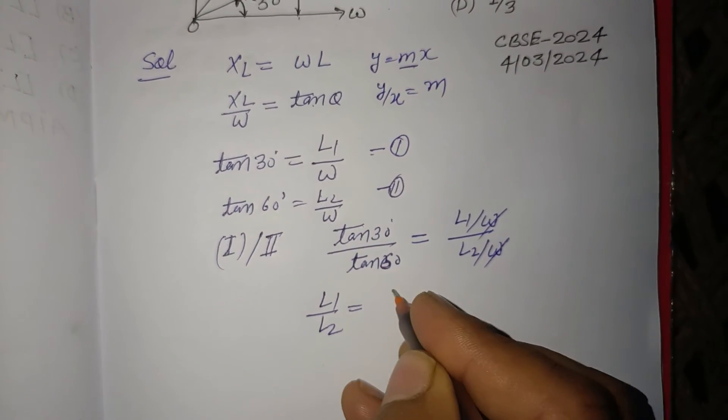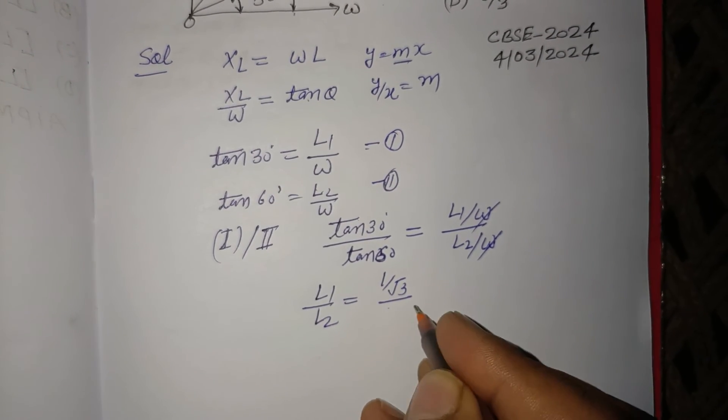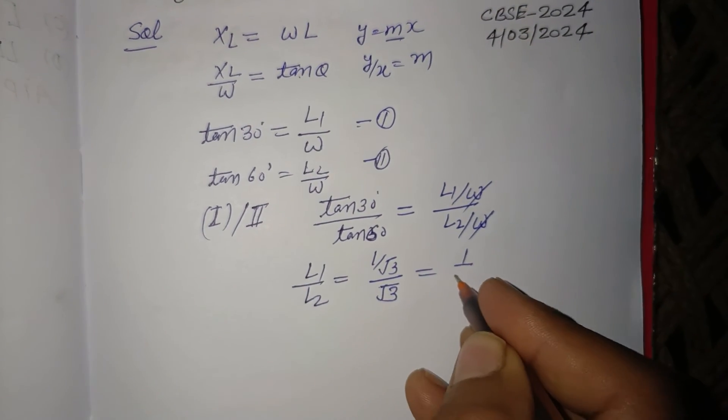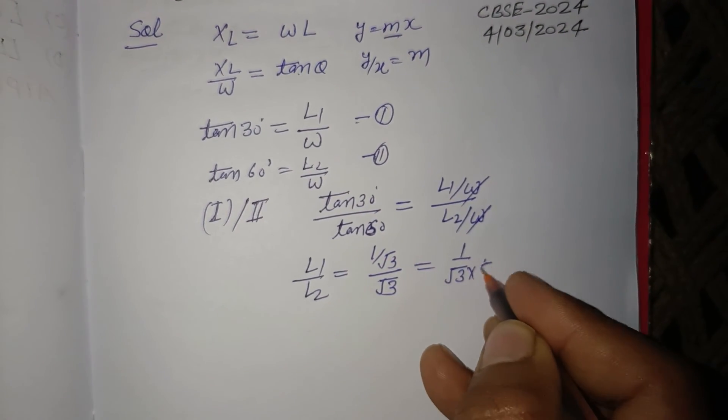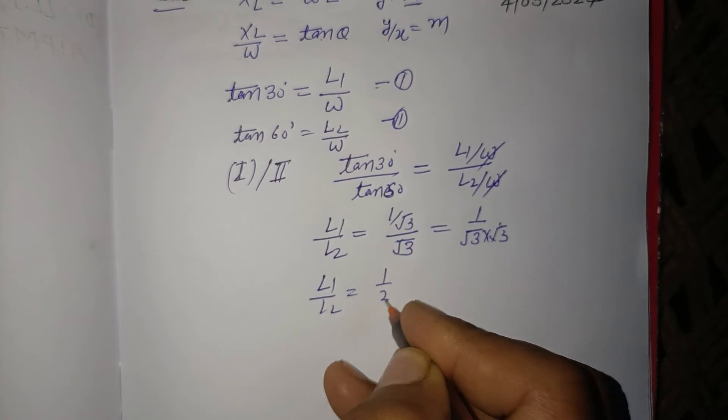tan 30° is 1 over √3, and tan 60° is √3. So this is (1/√3) divided by √3, which equals 1 over (√3 times √3). Therefore, L1/L2 equals 1/3.